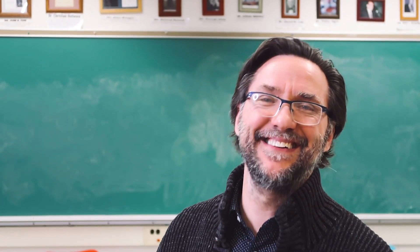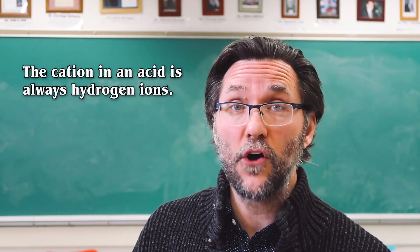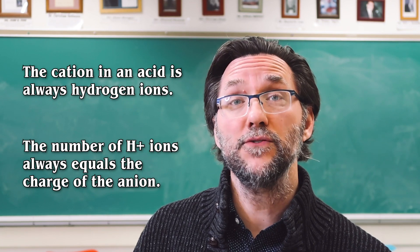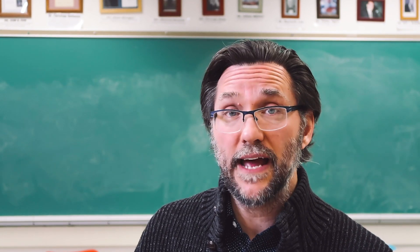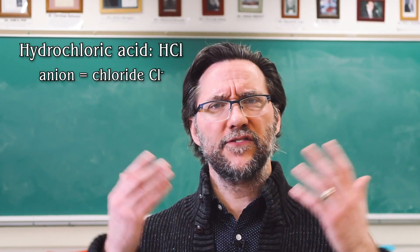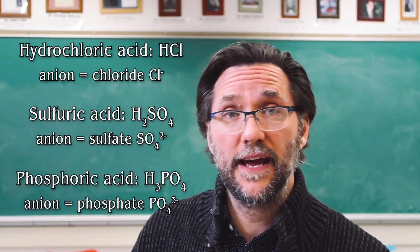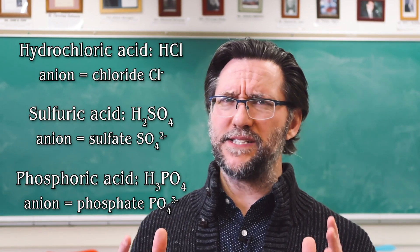So let's unpack that a little bit. Most of the problems students have with naming acids really comes from not understanding the anions themselves. The cation of an acid is always H+, so that makes it very easy — you just have to figure out how many H+ you need to cancel out the charge of the anion. Something like hydrochloric acid has a negative one charge, so you'll need just one hydrogen. But something like sulfate has a negative two charge, so you'll need two hydrogens. And something like phosphate has a negative three charge, so you'll need three hydrogens.